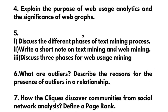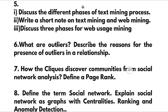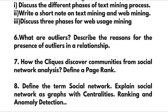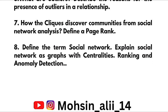The fifth question has sub-parts worth 5, 6, or 7 marks: discuss the different phases of the text mining process, write a short note on text mining and web mining, and discuss the three phases of web usage mining. Also, define outliers and describe the reasons for their presence in a relationship. Explain how cliques discover communities from social network analysis. Define page rank (3 or 4 marks). Define the term social network and explain social networks as graphs with centralities, ranking, and anomaly detection.